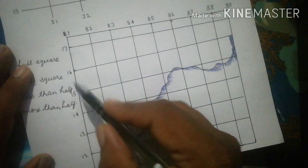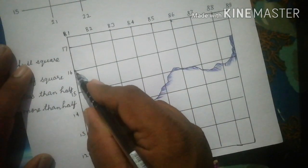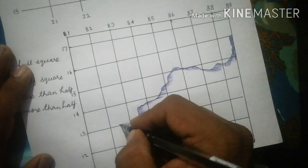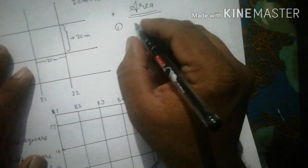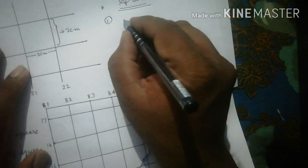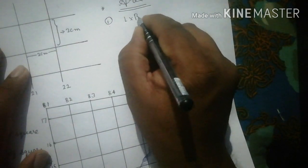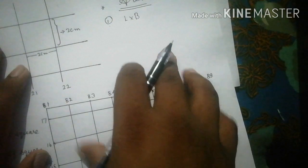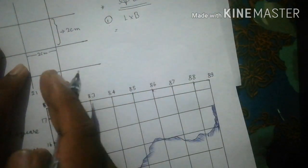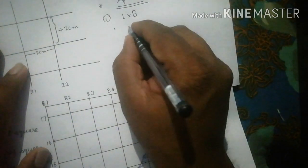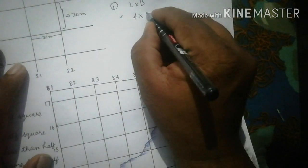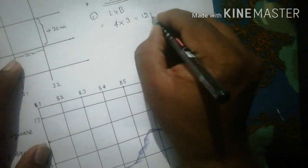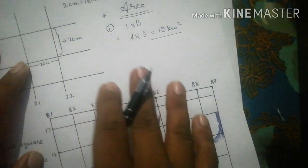From northing 13 to 16, there are 3 grid squares. Since we consider it a rectangle, the formula is length into breadth — 4 grid squares multiplied by 3 grid squares equals 12 kilometer square. As simple as that. This is the first type of area question, where eastings and northings are already given.